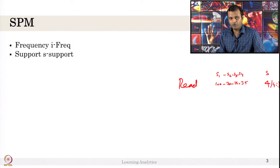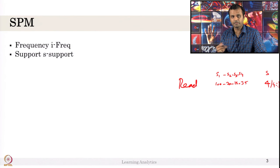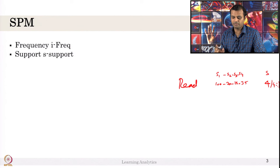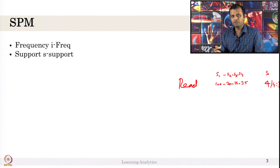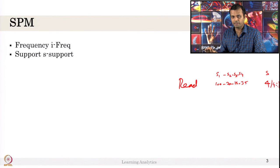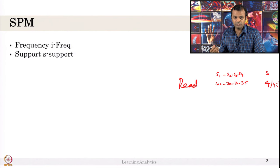A single item can also be a pattern, but this is just the action distribution — you can plot each action's frequency in descriptive analytics. Do not consider the single action as a pattern for your analysis, but it can be one. When you apply any pattern mining algorithm on a sequence of actions, it tries to give you single action patterns too, but you can ignore them since these are simply the distribution of how many times each action occurred per student, computable from descriptive analytics.